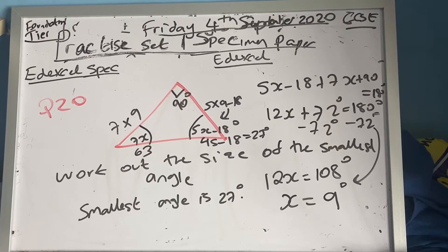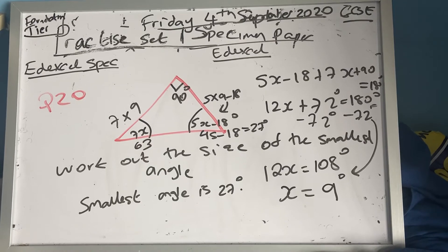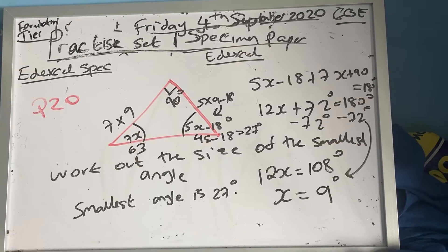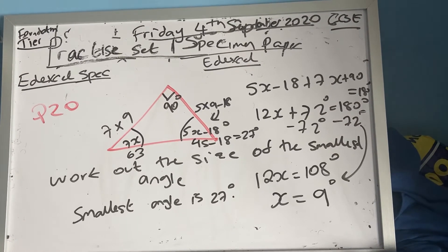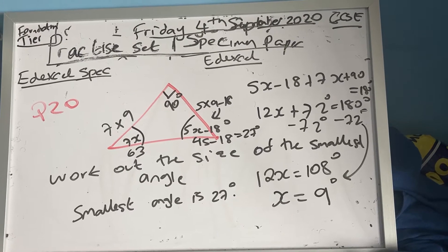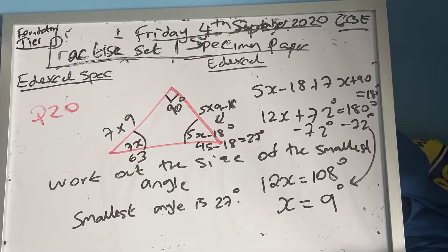Hello guys, this is question number 20. The question says here is a right angle triangle and asks to work out the size of the smallest angle.